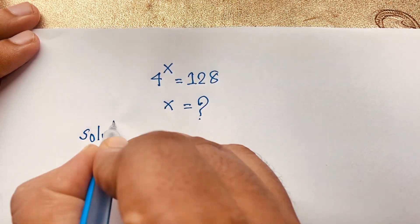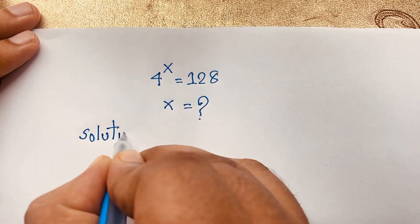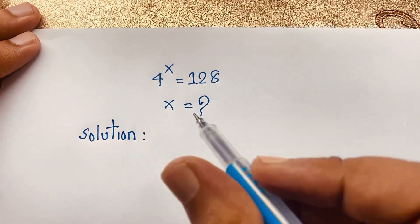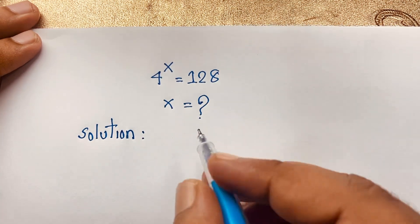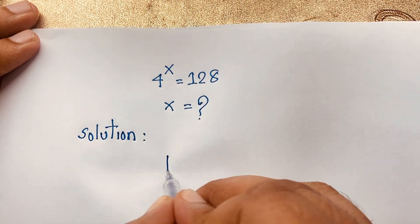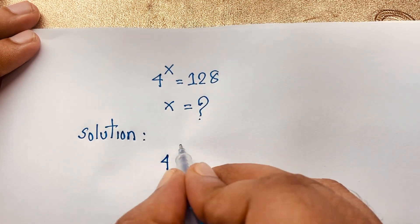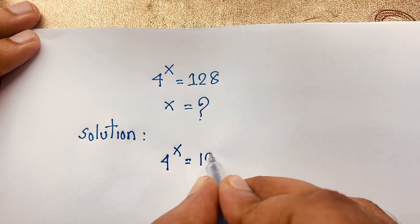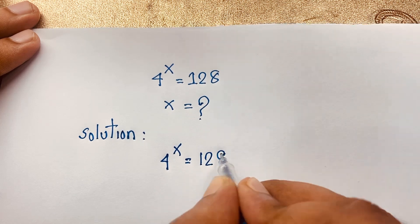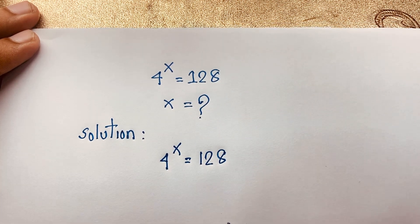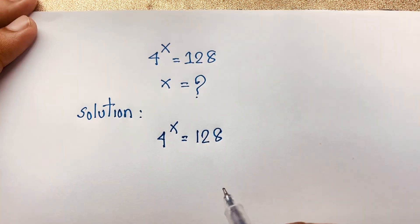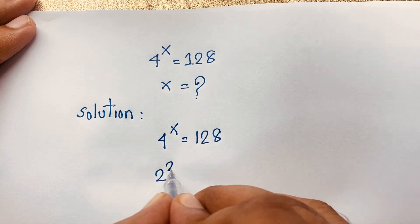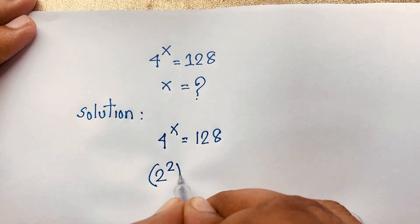I will solve this question using two methods. Here in Method 1, our question is 4 to the power x is equal to 128. Now, 4 can be written as 2 to the power 2, so we have (2^2)^x on the left side.